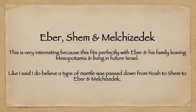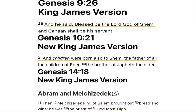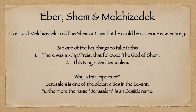Genesis chapter 9 verse 26: 'And he said, blessed be the Lord God of Shem.' Genesis chapter 10 verse 21: 'And children were born also to Shem, the father of all the children of Eber.' Genesis chapter 14 verse 18: 'Melchizedek, king of Salem, priest of God Most High.' Melchizedek could be Shem or Eber, or he could be someone else entirely. But the key thing to take from this is that there was a king and priesthood that followed the God of Shem, and there was a king ruling in Jerusalem.